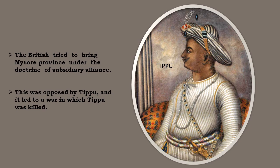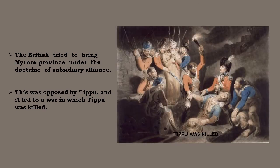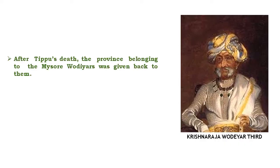The British tried to bring Mysore province under the doctrine of subsidiary alliance. This was opposed by Tipu, and it led to a war in which Tipu was killed. After Tipu's death, the province belonging to the Mysore wardiers was given back to them.